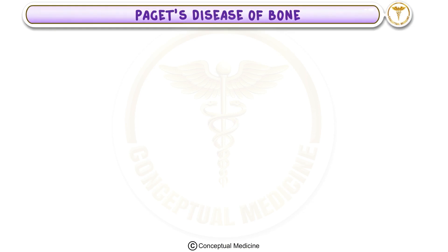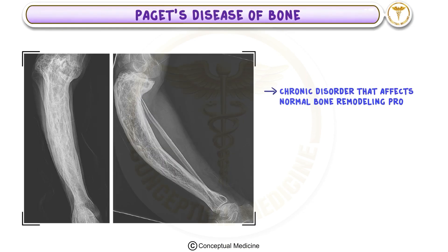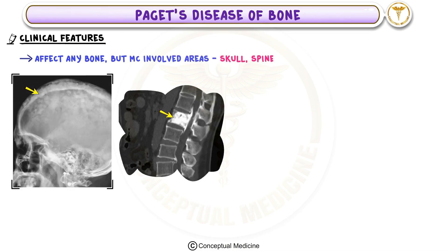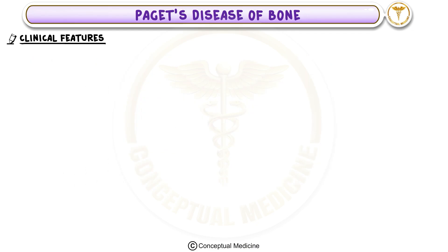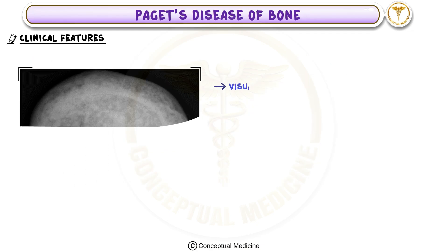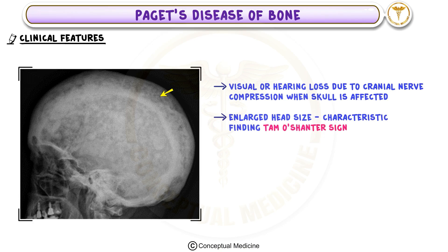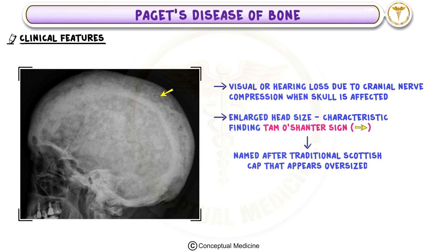Paget's disease of bone is a chronic disorder that affects the normal bone remodeling process, leading to abnormal bone formation and structural changes. It can affect any bone, but most commonly involves the skull, spine, pelvis, and long bones. Patients may experience visual or hearing loss due to cranial nerve compression when the skull is affected, and may develop an enlarged head size — a characteristic finding known as the tam o'shanter sign.